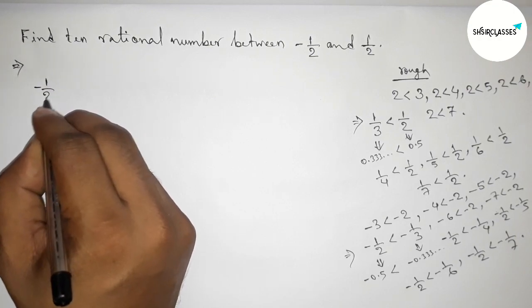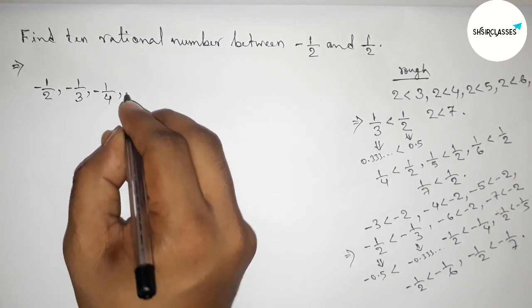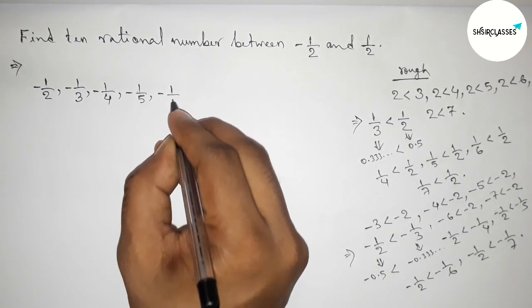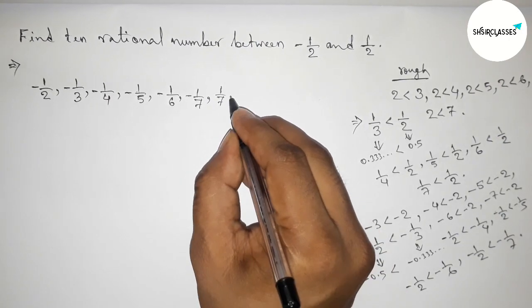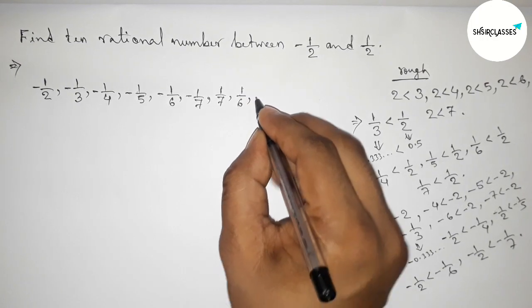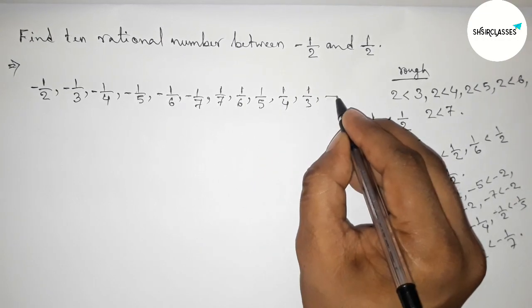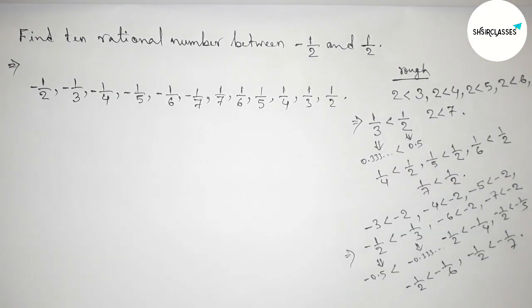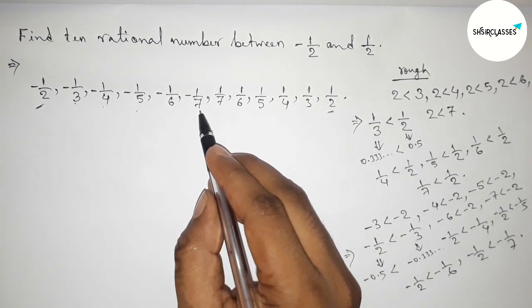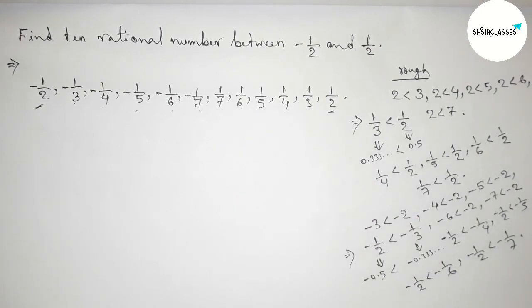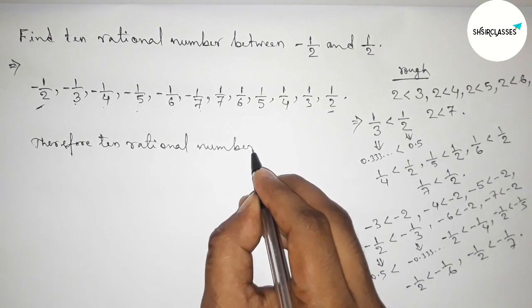Now write down all the rational numbers: minus 1 by 2, minus 1 by 3, minus 1 by 4, minus 1 by 5, minus 1 by 6, minus 1 by 7, then 1 by 7, 1 by 6, 1 by 5, 1 by 4, 1 by 3, and 1 by 2. So between minus 1 by 2 and 1 by 2, these are the required 10 rational numbers.